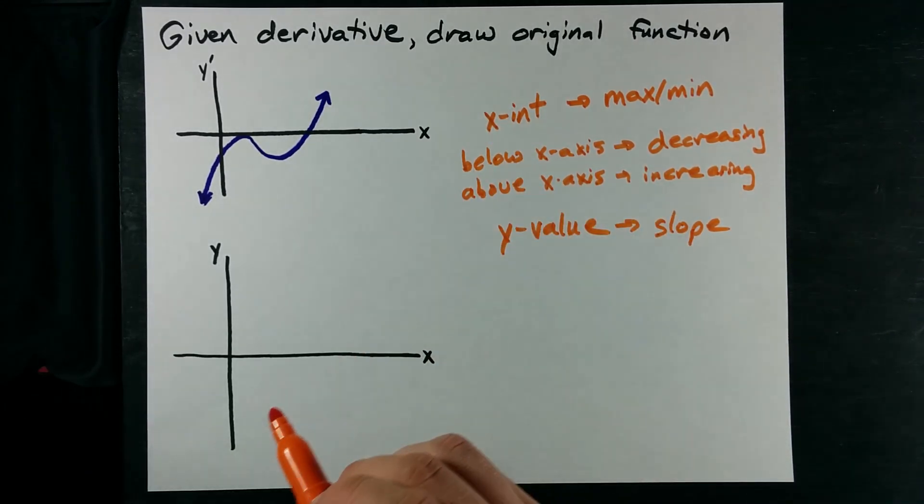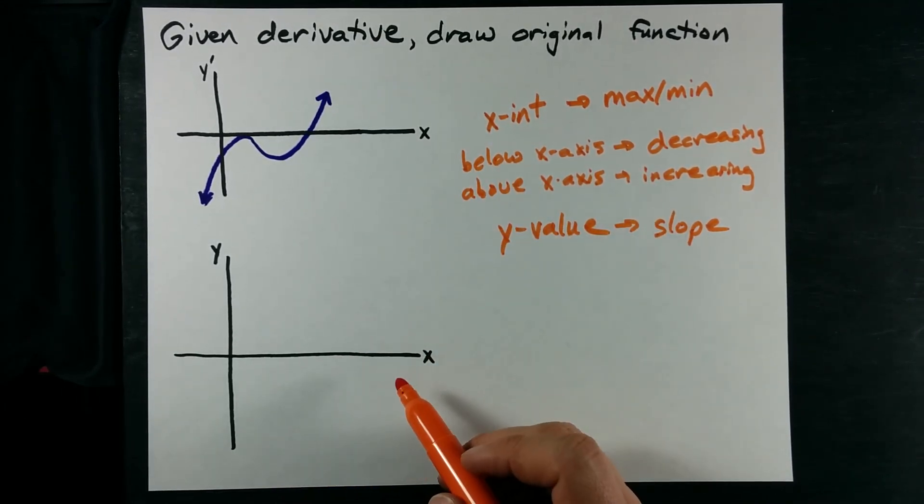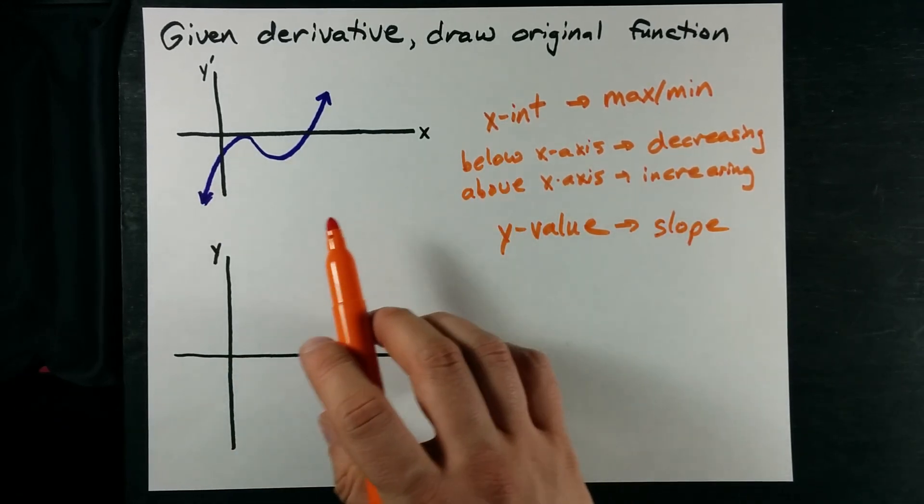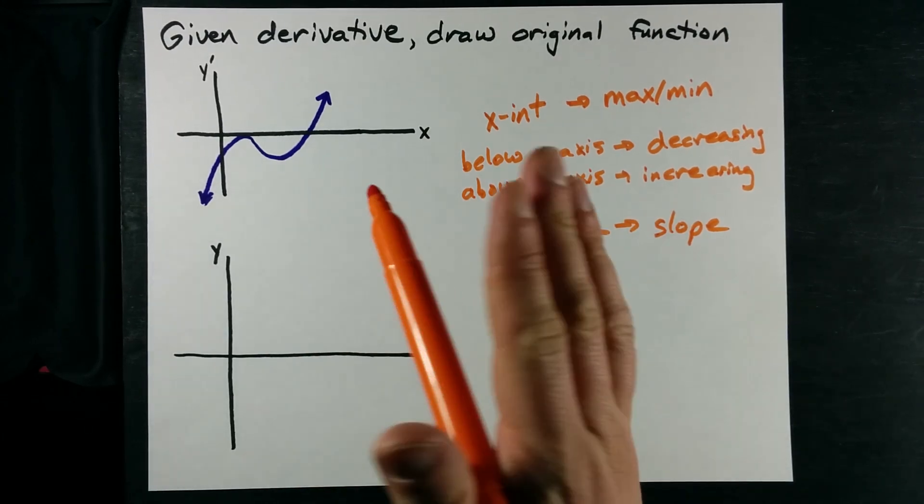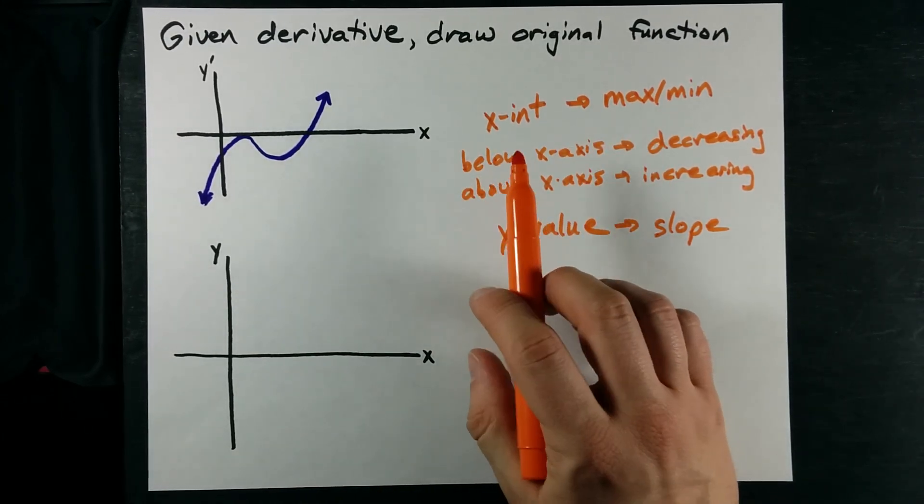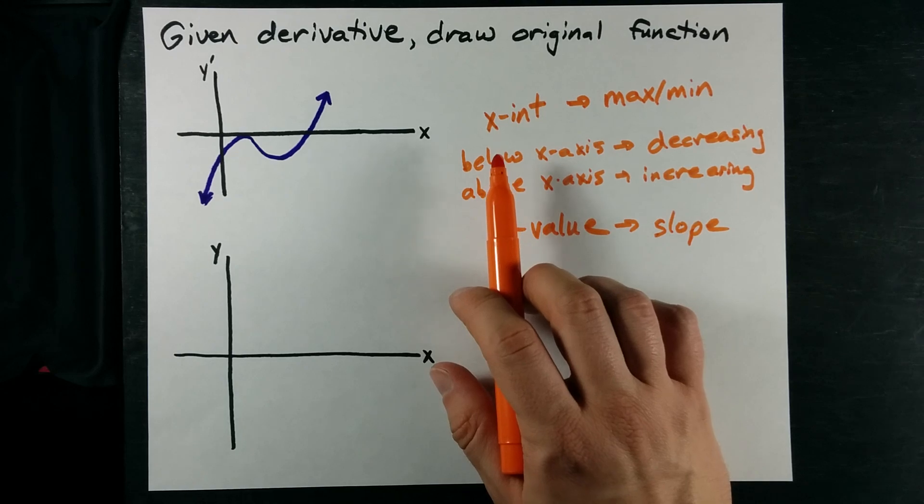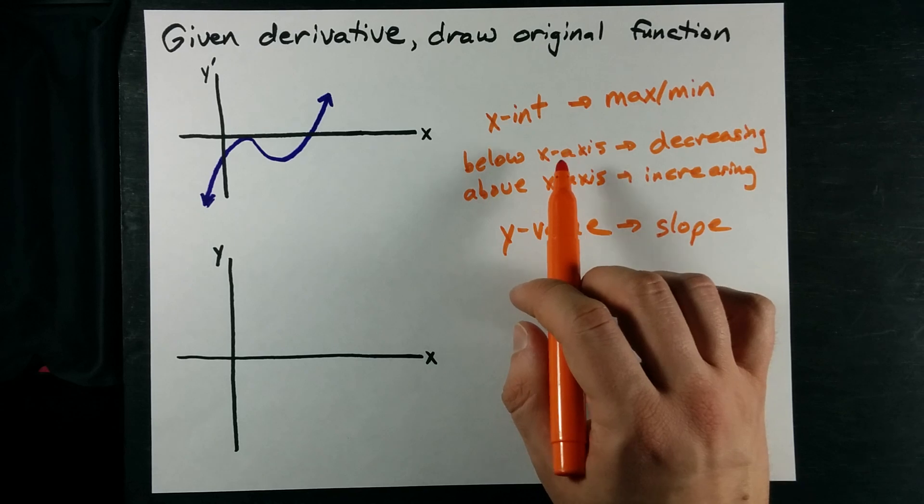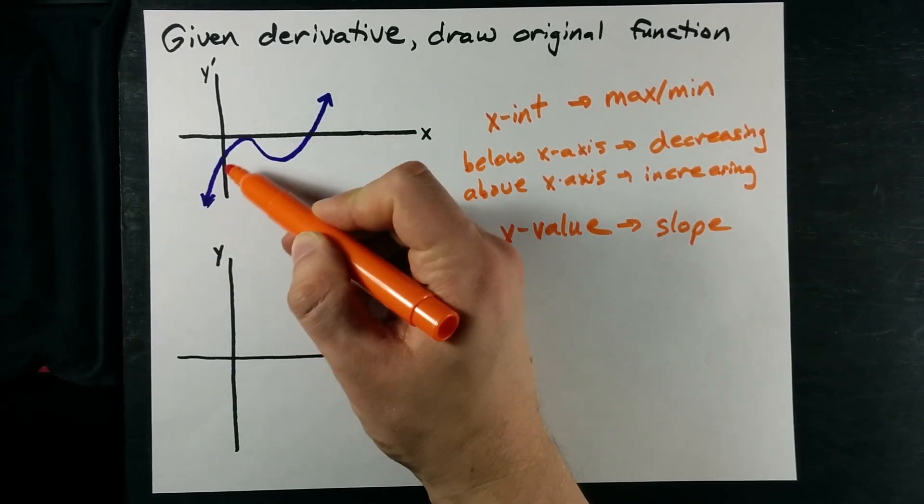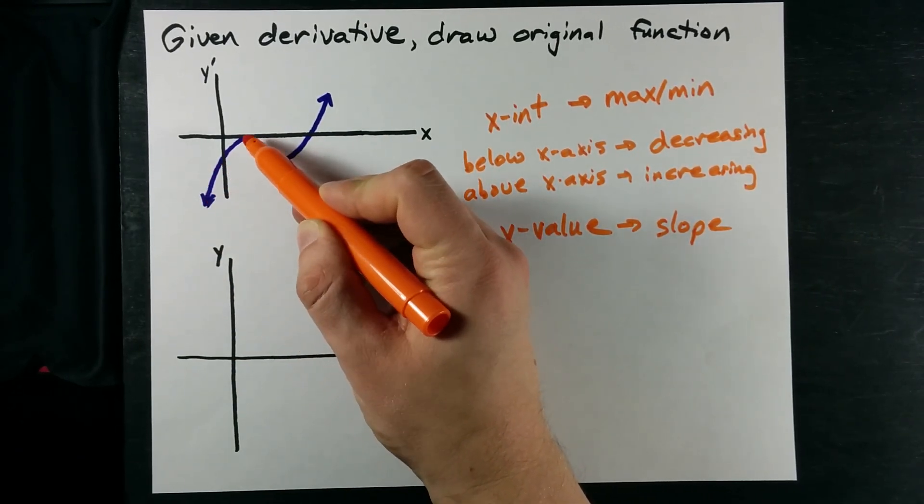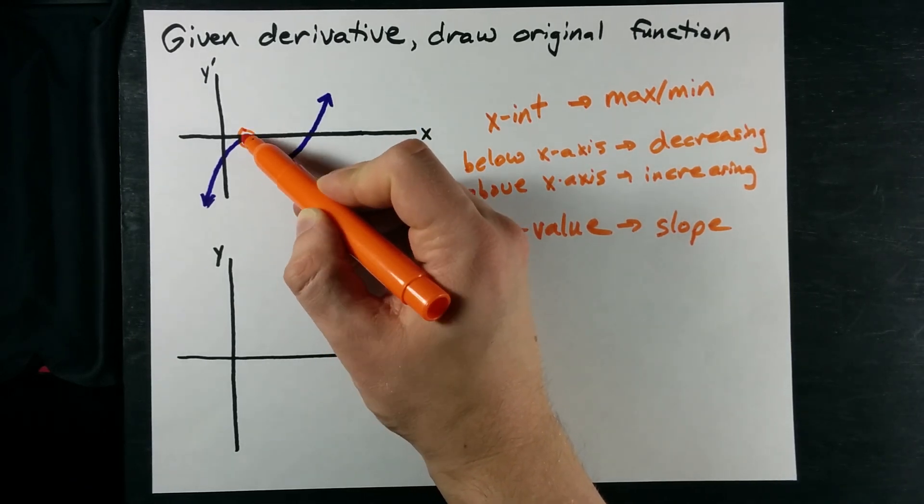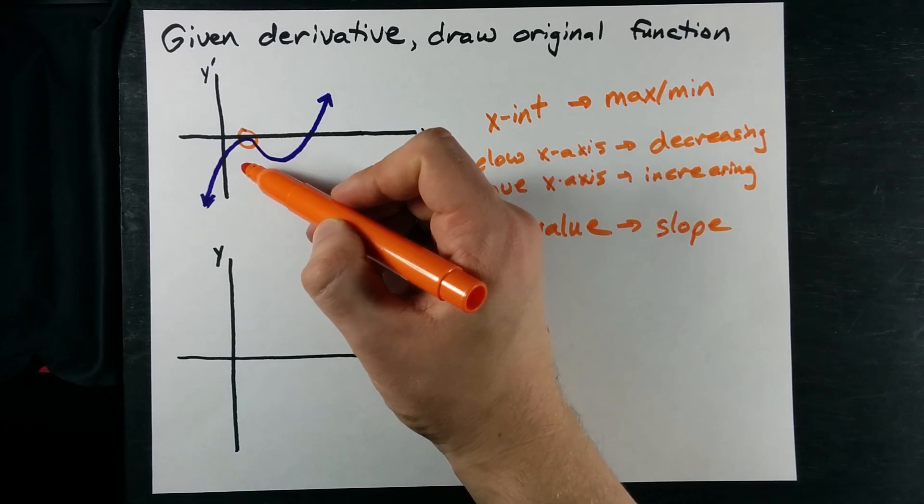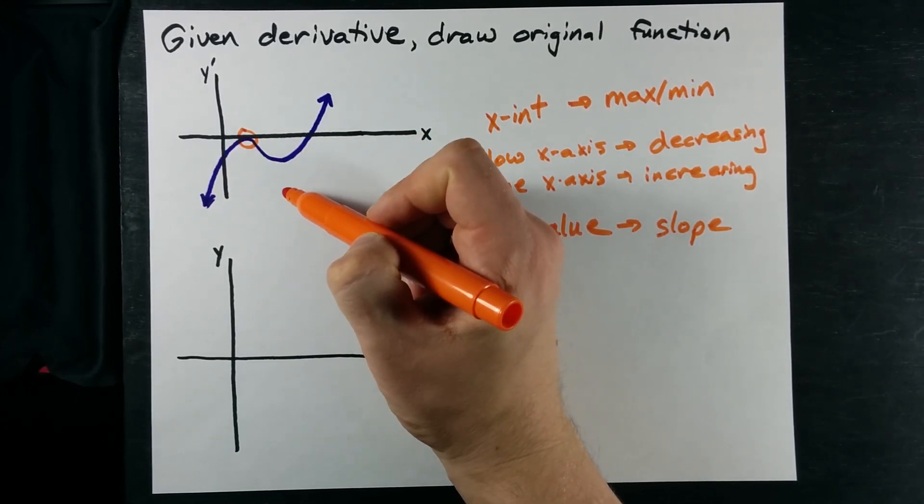x-intercepts become maxes or mins. Let's see what we can do with that. I don't know whether or not I'm going to have a max or a min at either point yet, so we'll get there. The original function needs to be decreasing when I'm below the x-axis. That's everywhere here. Now, it's not decreasing at this point exactly because the slope is zero, but it's decreasing and then it continues decreasing.